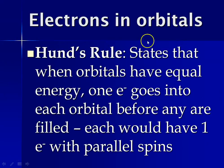And then the next rule that we need to follow is Hund's rule, which states that when orbitals have equal energy, you have to put one electron into each orbital before any are filled. So before you can put the second electron in an orbital, you'd have to have one electron in each of the orbitals before they could be filled in.